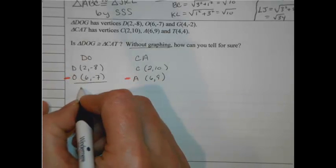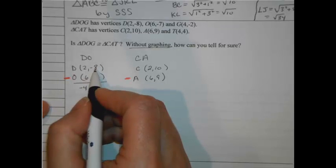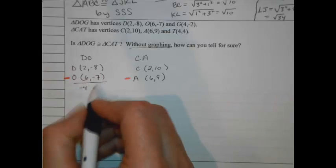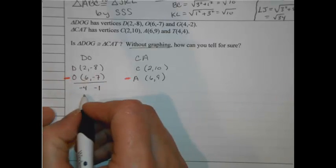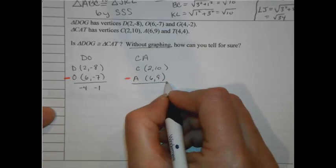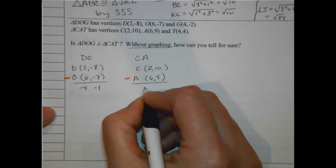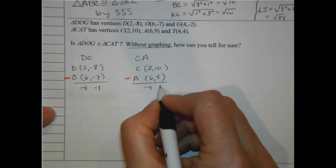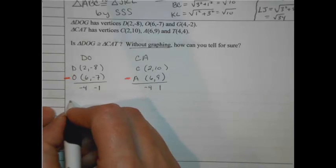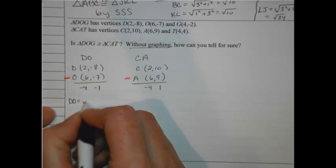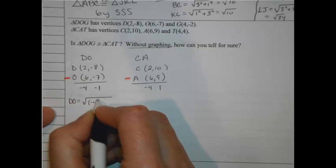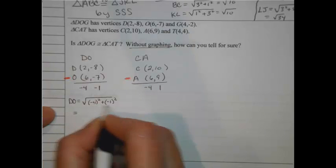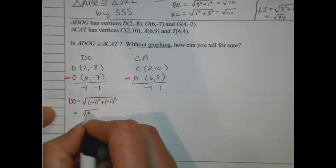So I'm going to subtract those and find out what my key numbers in the Pythagorean Theorem should be. Alright, so 2 subtract 6, that gives me a -4. And when I take -8 and subtract that -7, again, that's going to be plus. So -8 plus 7 is going to bring me to -1. On this one, my subtractions: 2 minus 6 gives me -4, and 10 minus 9, that's just going to give me a positive 1.